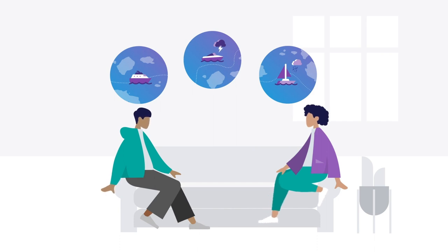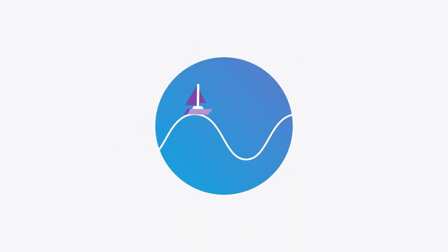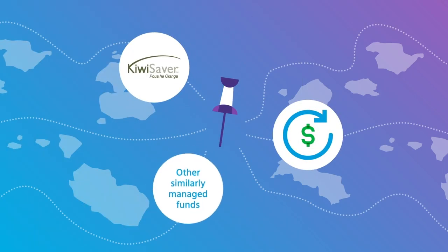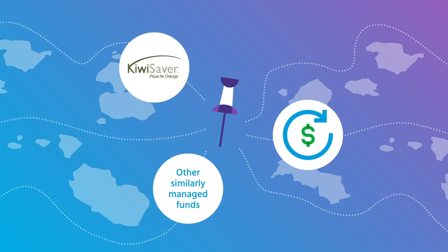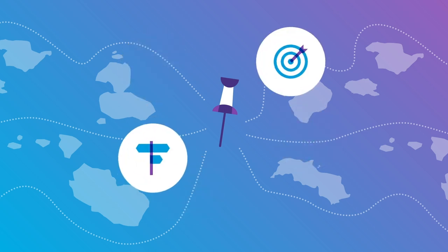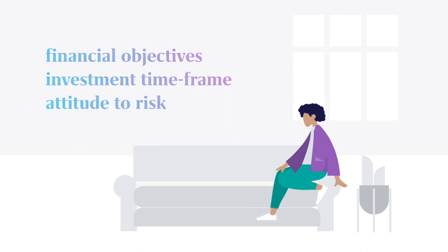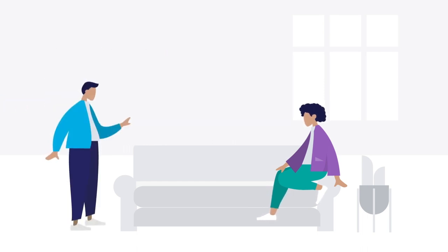It is important to also consider your partner's risk profile. For example, when investing for retirement, both of you need to be comfortable with your investment strategy. As we have seen, market fluctuations are a normal part of investing. Saving for retirement through a superannuation scheme or KiwiSaver is generally considered a long-term investment. Before making changes to your investment options, carefully consider your long-term strategy for achieving your goals. It is important to review your investment portfolio to ensure it suits your financial objectives, investment timeframe and attitude to risk. Most importantly, seek financial advice from a financial advisor before you act, not after.